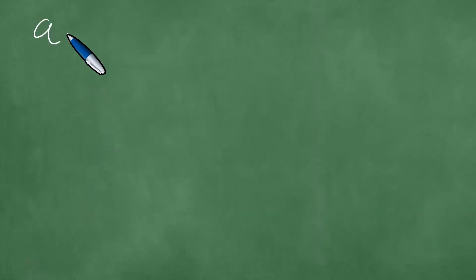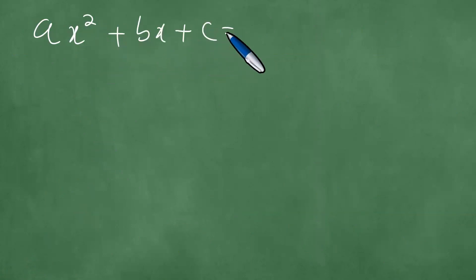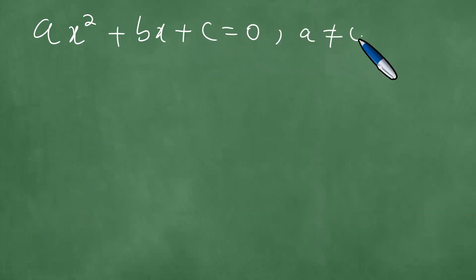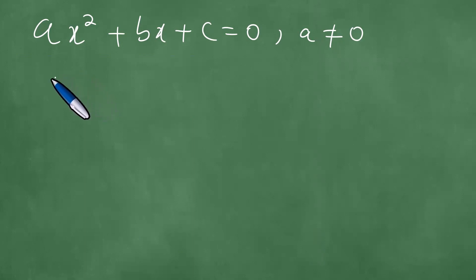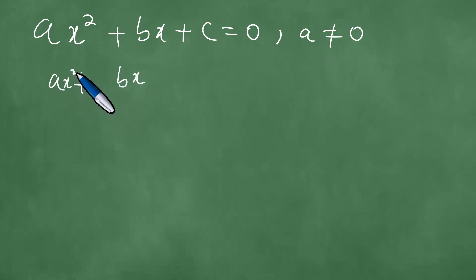First things first, we have ax squared plus bx plus c equals 0, with a not equal to 0. We decide to divide each of the terms by x squared, getting a plus bx over x squared.